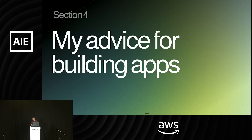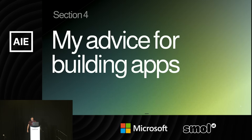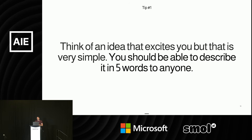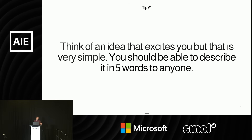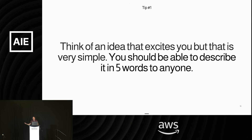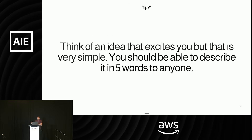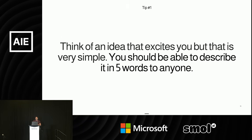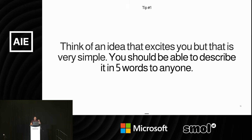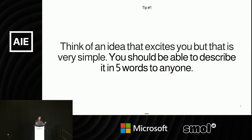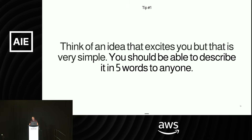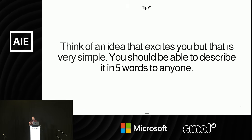For advice on building apps, I have seven tips. Tip one: think of an idea that excites you but is very very simple — you should be able to describe it to anyone in five words. Like Blink Shot: generate real-time images. Llama Coder: go from text to an app. One of the biggest mistakes people make is they try to build a grandiose version — like a personal CRM with a dashboard that emails you every week — spend six months building it, and then realize it wasn't the right thing or nobody cares. So think of an idea that excites you but is really really simple.